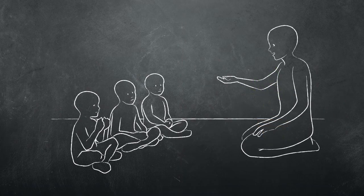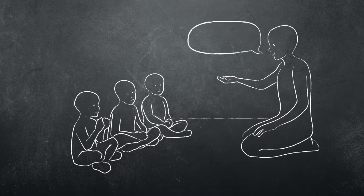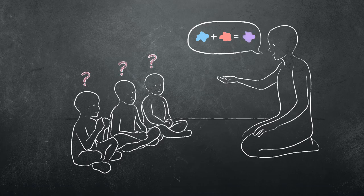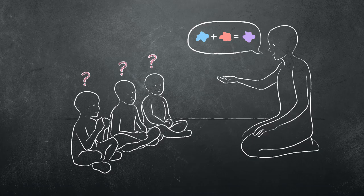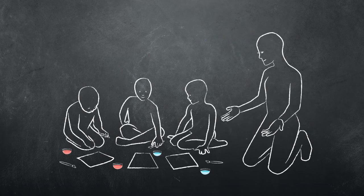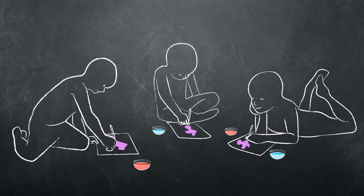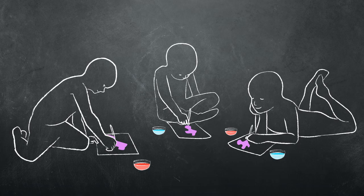Also, when the teacher introduces a new idea or concept like mixing two colors to make a new color, students have a hard time understanding. So the teacher can use the learning by doing method to provide an activity that makes the idea easier to understand.